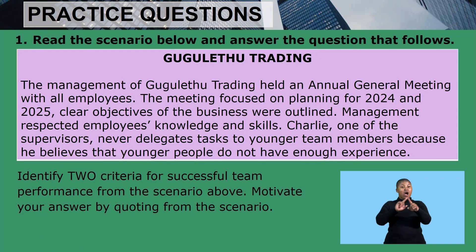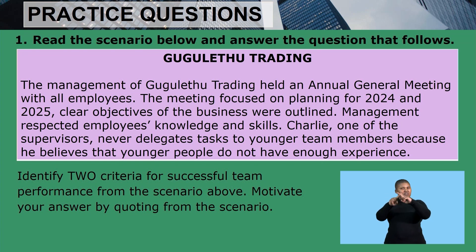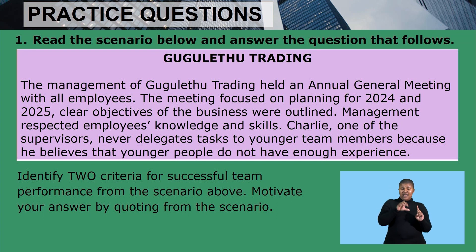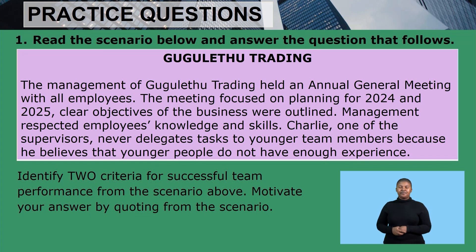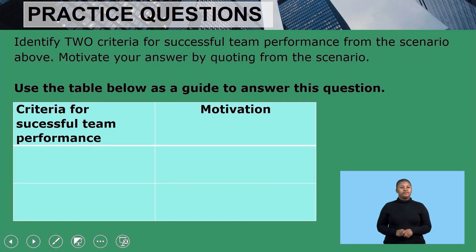Our first practice question says: read the scenario below and answer the questions that follow. Guguletu Trading — the management of Guguletu Trading held an annual general meeting with all employees. The meeting focused on planning for 2024 and 2025. Clear objectives of the business were outlined. Management respected employees' knowledge and skills. Charlie, one of the supervisors, never delegates tasks to younger team members because he believes that younger people do not have enough experience. Identify two criteria for successful team performance from the scenario above and motivate your answer by quoting from the scenario.